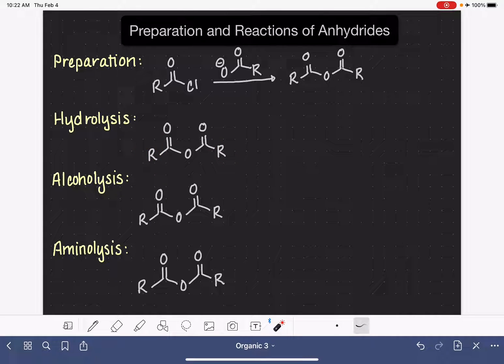If you are given a problem where the R groups of an anhydride are different from each other, you will need to draw two products for the reaction. I'll explain what I mean by that when we look at our first example.